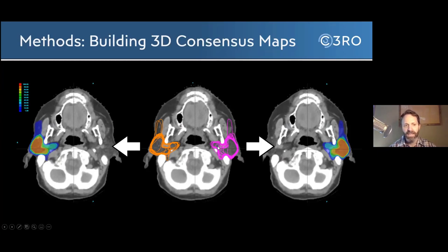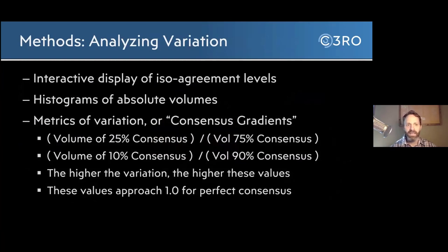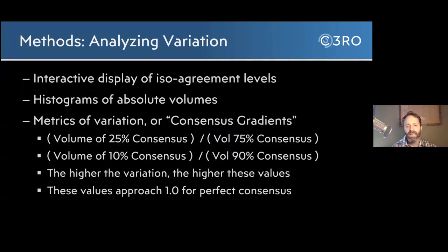The blue regions represent where a few people thought it was part of the organ, and as it gets closer to red, fully red would be where everyone agreed that every red voxel was part of that particular organ. It's pretty easy to interpret in that regard. We'll be looking at a lot of those images today — a good qualitative look to see where the variation is. But we do need to put some numbers on this as well, so we'll be looking at histograms of absolute volumes.